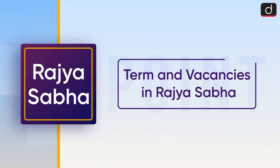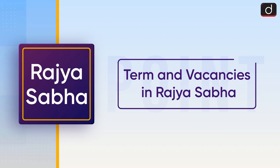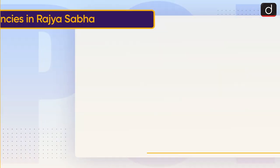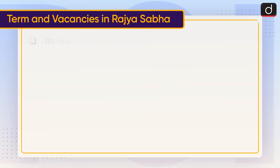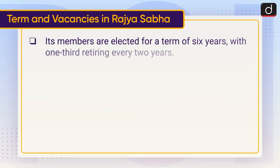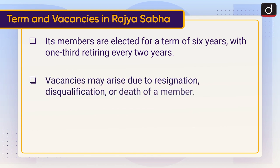Moving on to terms and vacancies in Rajya Sabha — its members are elected for a term of six years, with one-third retiring every two years. Vacancies may arise due to resignation, disqualification, or death of a member.